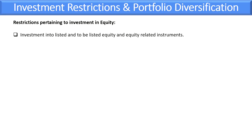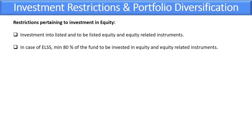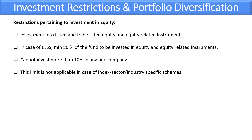For restrictions pertaining to investment in equities: equity schemes can invest only in listed and to-be-listed equity and equity-related instruments. In the case of Equity Linked Saving Scheme (ELSS), minimum 80% of the fund must be invested in equity and equity-related instruments. A scheme cannot invest more than 10% of its assets in any one company, and cannot hold more than 10% of the paid-up capital of any company. This limit is not applicable in the case of index funds, sector funds, and industry-specific schemes.